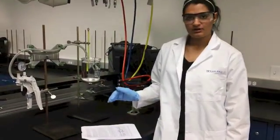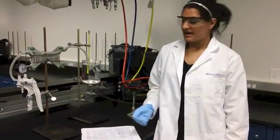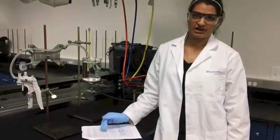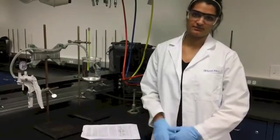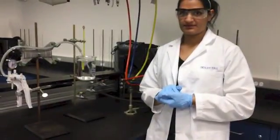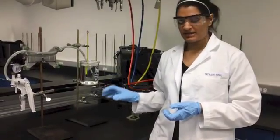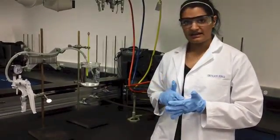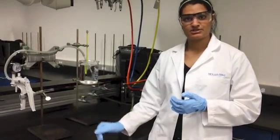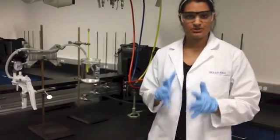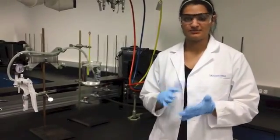You'll then heat the water bath using a Bunsen burner and repeat the same process at six different measurements of temperature and record the pressures as well. You will then cool the water bath by adding ice to it. Repeat this process again at six different data points recording the temperature and the pressures. In the end, you'll have a total of 10 to 12 measurements of temperature and pressure.